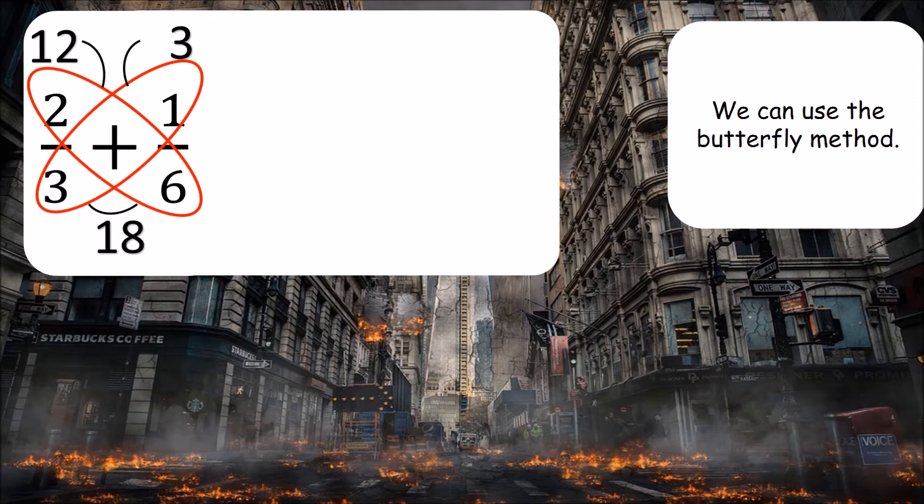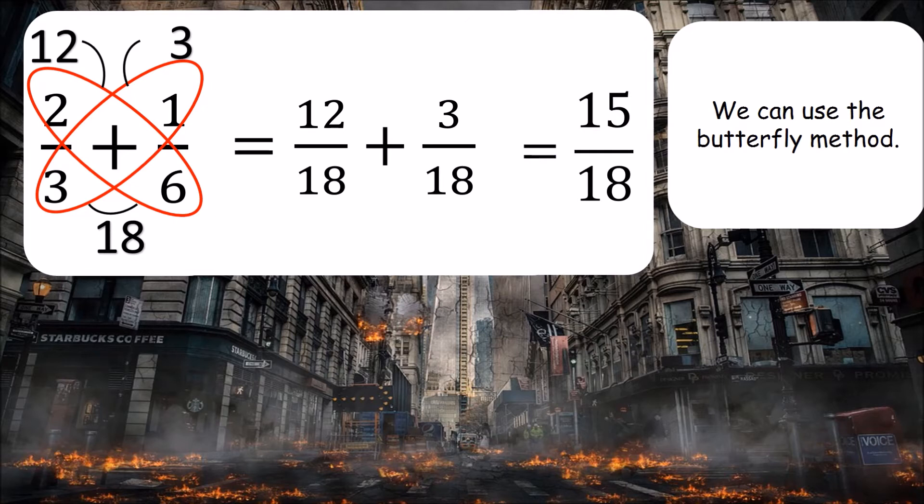So now what we have is two new fractions with the same denominator. So we have twelve eighteenths and three eighteenths. Now we know this is much simpler now that the denominators are the same. So we know that eighteen will be our denominator and we know that twelve plus three is fifteen. So the answer is fifteen eighteenths.